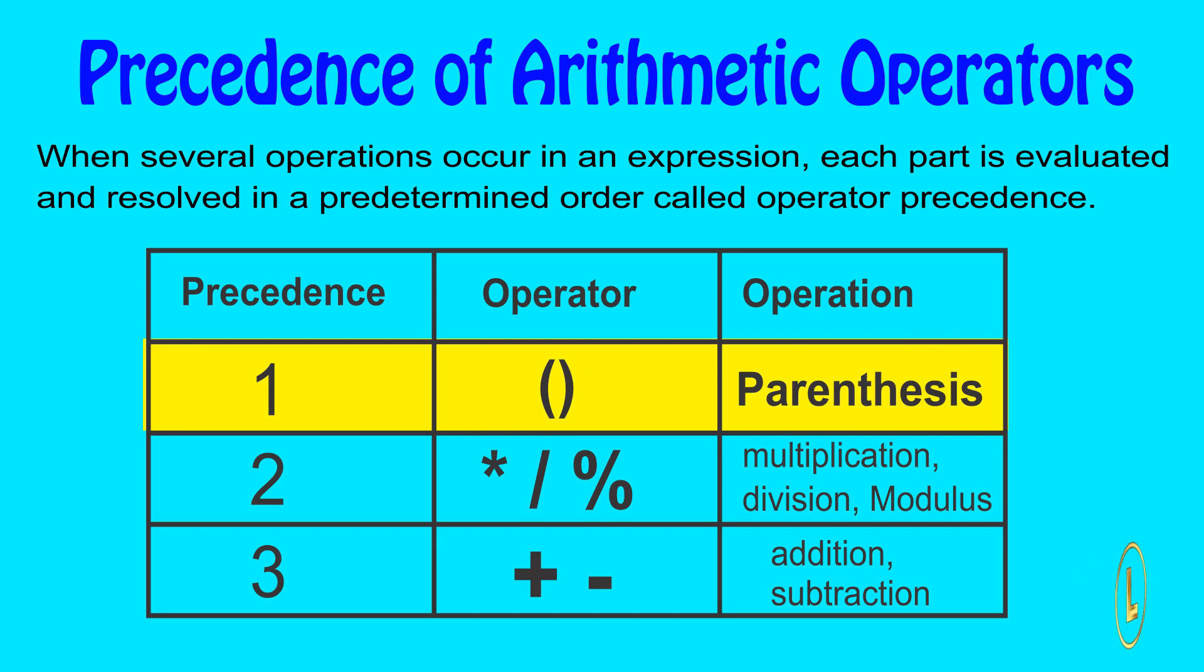The operators multiplication, division, and modulus have the highest precedence after parentheses and are evaluated next. Addition and subtraction operators are evaluated last because they have the lowest precedence. If in an expression all operators are equal precedence, then they are evaluated in the left to right order in which they appear.